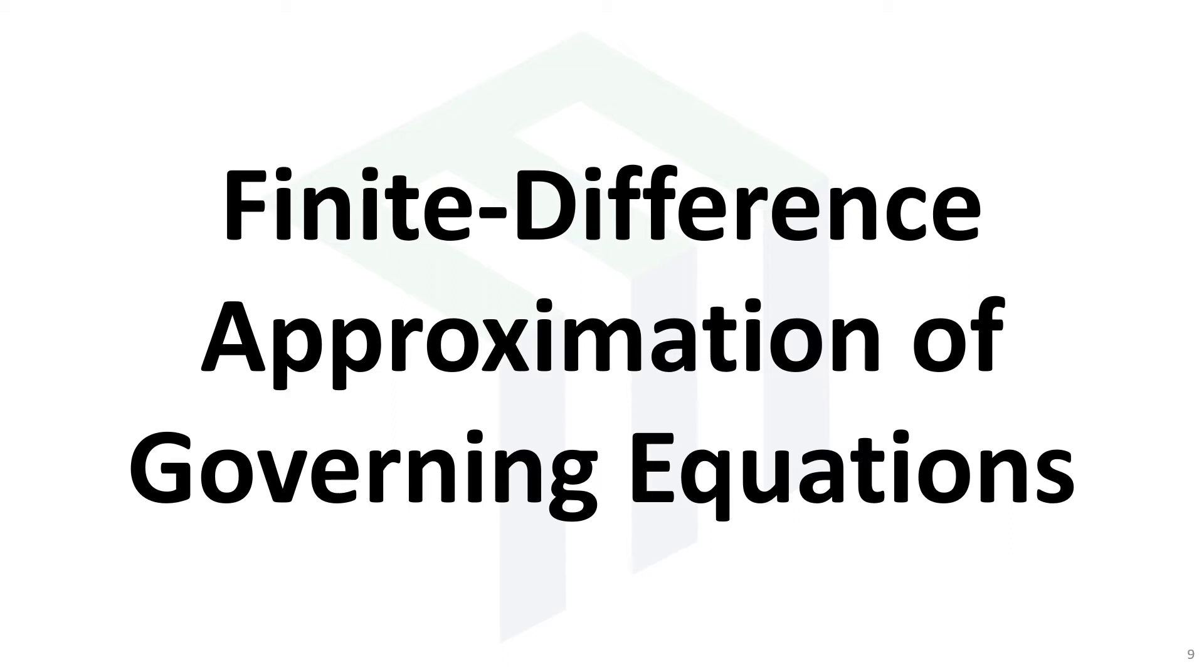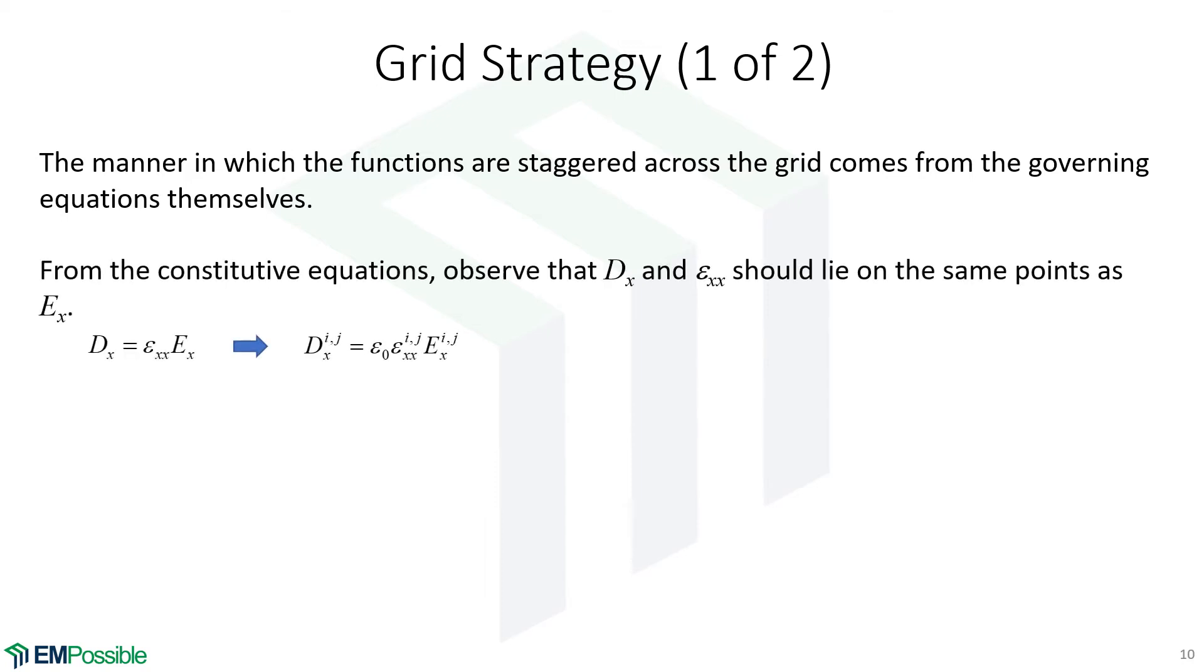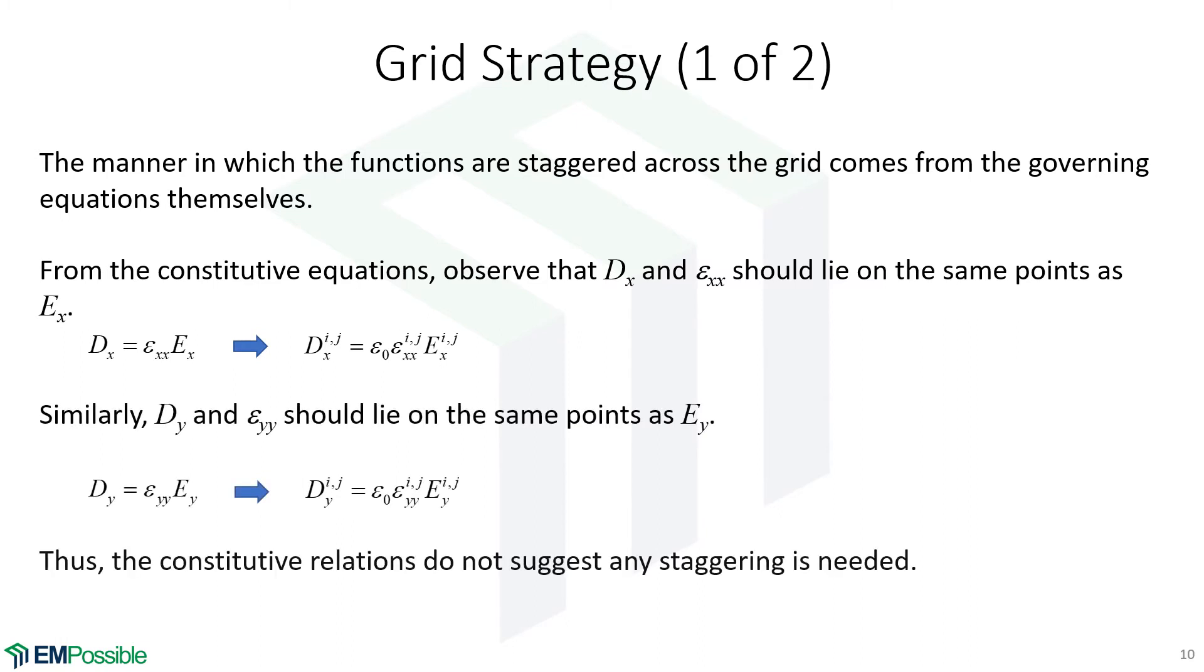Finite difference approximation of the governing equations. We need to figure out whether or not we need to stagger our derivatives across the grid. Let's look first at the constitutive relations. Remember, we need every term in our finite difference equation to exist at the same point in time and space. We're only concerned about space, and we would like our finite differences to be very tight and only span one grid cell. Well, there are no finite differences here, so we can just define all of these terms to exist at the same point. The conclusion is as far as the constitutive relations are concerned, no staggering is needed.